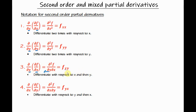On the last notation, we find the partial derivative with respect to x and then with respect to y, so the order is left to right. We can use either of these two notations. There is also a reverse notation where we take the partial derivative with respect to y first and then with respect to x. These last two are different notations and they are called mixed partial derivatives.